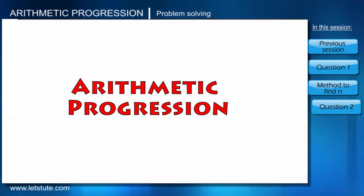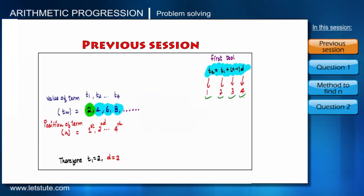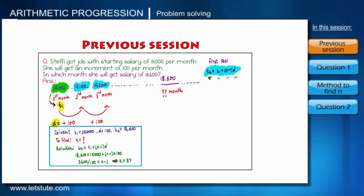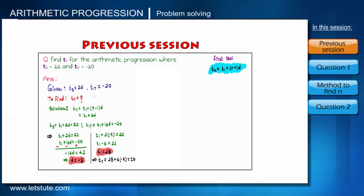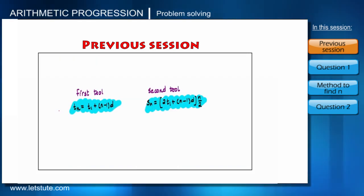As we learned in our previous session, we covered how to identify basic parameters from different scenarios and situations. We solved some questions for better understanding. We know that we have two fundamental formulas: TN and SN. In the previous session, we used the first formula only.